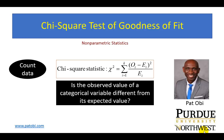Hello, this is Pat Obey at Purdue University Northwest. In this video, I discuss the Chi-square goodness of fit test, which is a non-parametric test and therefore uses count, or enumerative data, to make an inference about some categorical variable.